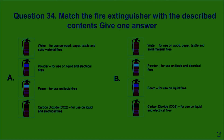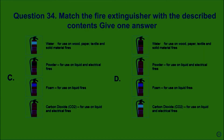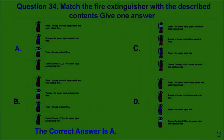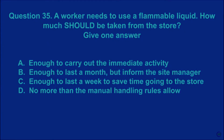Question 34: Match the fire extinguisher with the described contents. Give one answer. A, B, C, D. The correct answer is A. Question 35: A worker needs to use a flammable liquid. How much should be taken from the store? Give one answer. A: enough to carry out the immediate activity. B: enough to last a month but inform the site manager. C: enough to last a week to save time going to the store. The correct answer is A.